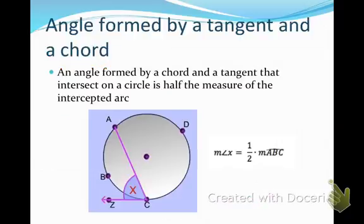This is a theorem I left out of the last one, and it says that an angle formed by a chord and a tangent that intersect on a circle. So notice that chord AC and tangent CJ intersect at point C. So therefore, the angle that those two form is exactly half the measure of the intercepted arc. So the intercepted arc is ABC. So angle X is half of that.